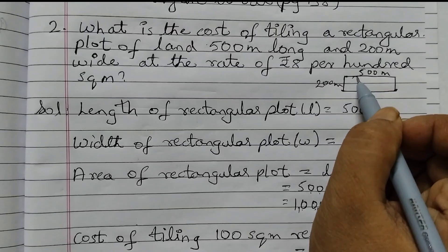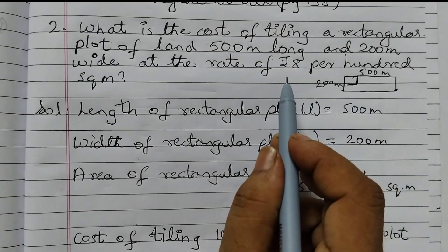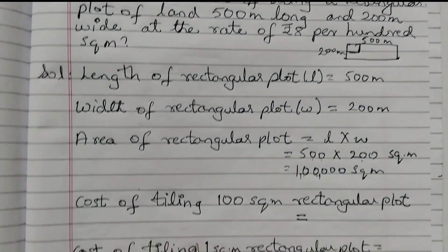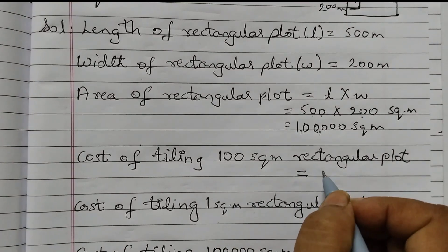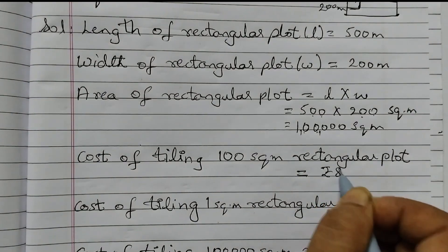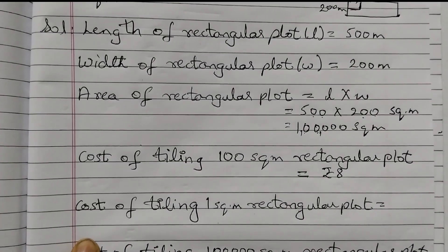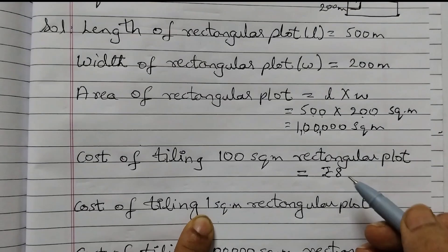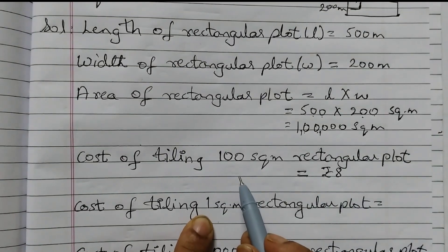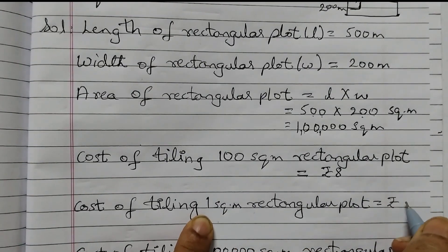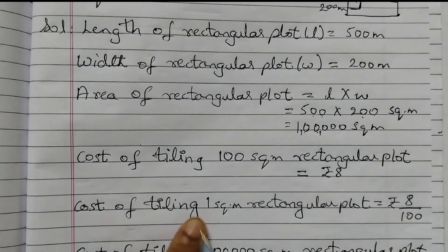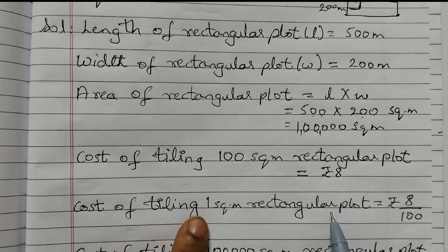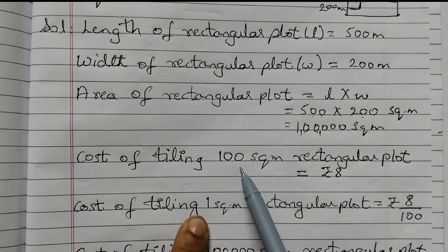Now, the cost of tiling 100 square meter is given as rupees 8. First we will find the cost of tiling 1 square meter of the rectangular plot, so that will be 8 divided by 100. Cost of tiling 100 square meter is rupees 8, so cost of tiling just 1 square meter would be 8 divided by 100.